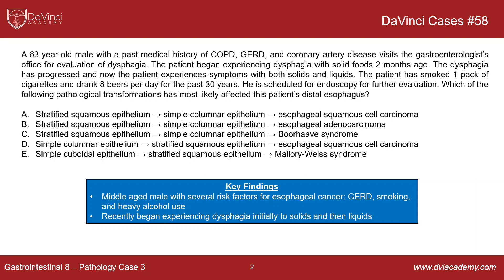Our first three answer choices — A, B, and C — all involve stratified squamous epithelium transitioning into simple columnar epithelium. What separates them: choice A has that transition ending in esophageal squamous cell carcinoma; choice B is where the columnar epithelium transitions into esophageal adenocarcinoma; and choice C is where that simple columnar epithelium transitions into Borhoff syndrome. Choice D has simple columnar epithelium transitioning to stratified squamous epithelium and then into esophageal squamous cell carcinoma. Choice E is simple cuboidal epithelium transitioning to stratified squamous epithelium and then eventually Mallory-Weiss syndrome.